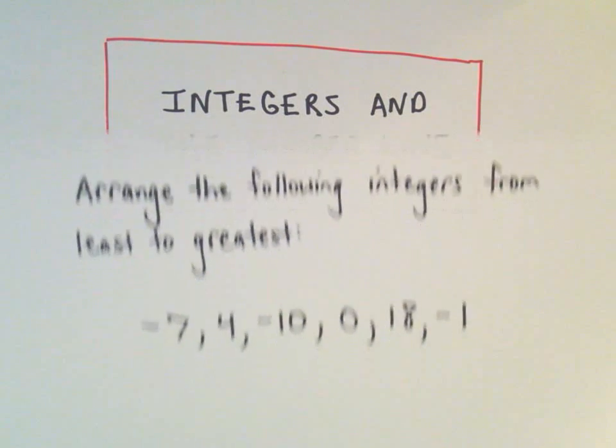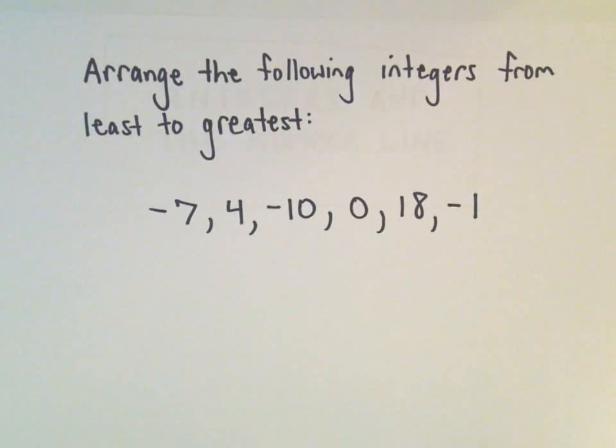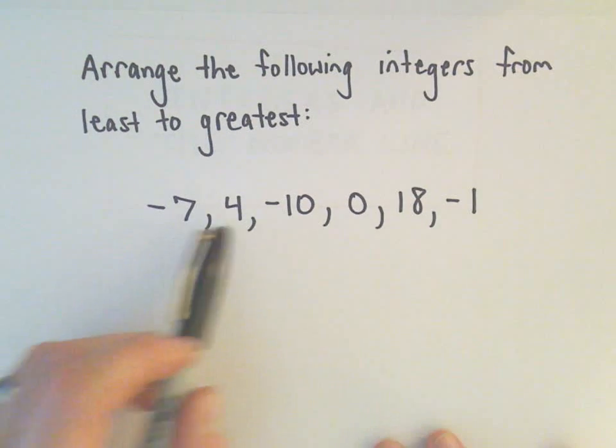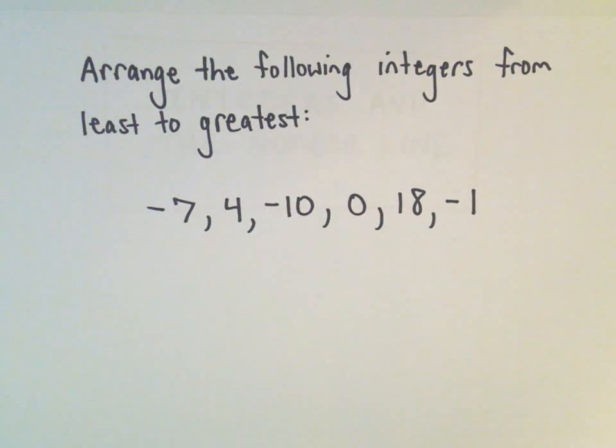All right, in this example, we're going to arrange some integers from the least to the greatest. We've got negative 7, positive 4, negative 10, 0, 18, and negative 1.